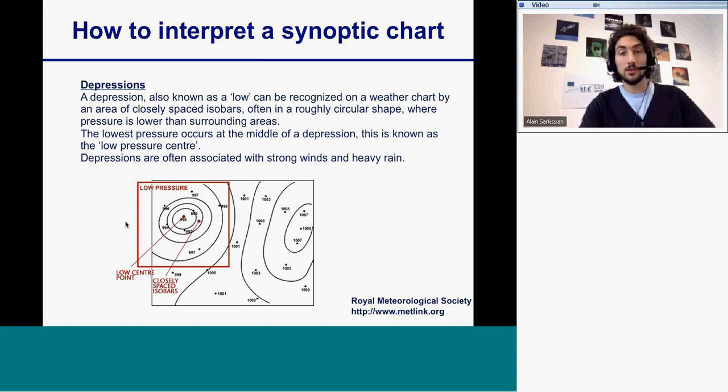The lowest pressure occurs at the middle of depression. This is known as the low pressure center. We are interested in the low pressure because they are often associated with strong winds and heavy rain.